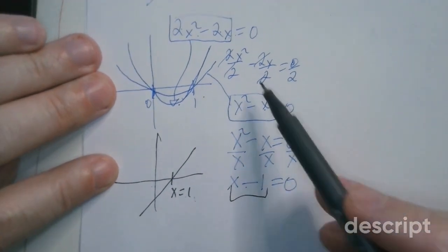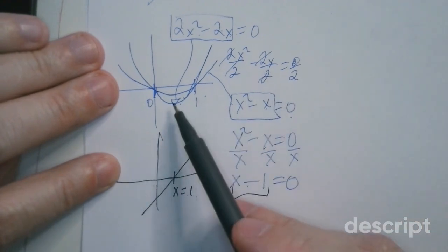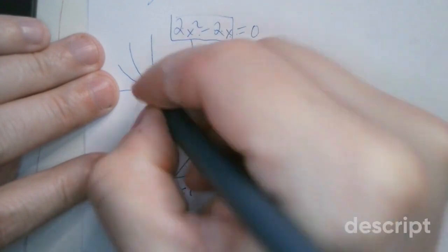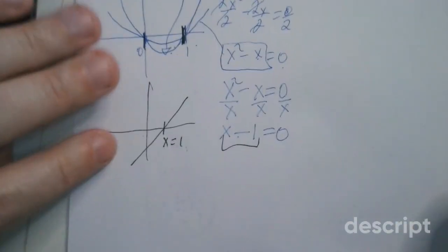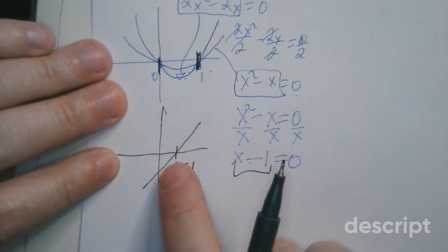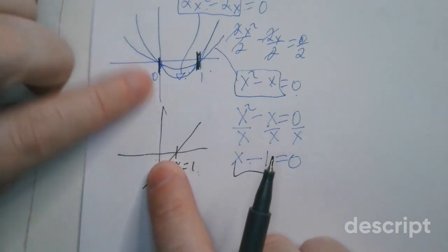So you can divide by non-zero constants. It changes the shape by flattening it, for example, stretching it depends. But important pieces like the roots here do not change. If you divide by a variable, then you're dividing away and you're changing the shape, then you are losing a solution right here.